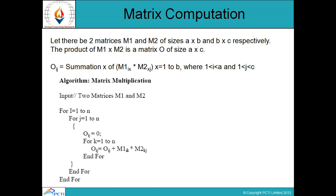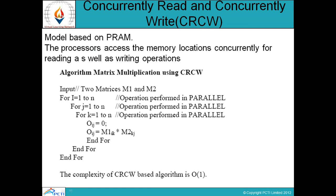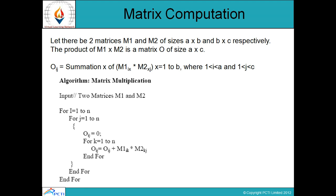Next is matrix computation. Let there be two matrices M1 and M2, of sizes A×B and B×C respectively. If we take their product and save it in O, the size of O will be A×C. If we write this in algorithm form: first run a for loop for i, then a for loop for j from 1 to N, initialize O[i][j] to 0, then run a loop for k from 1 to N, accumulate the product into O[i][j], and then end the loops. In this way we get matrix multiplication.